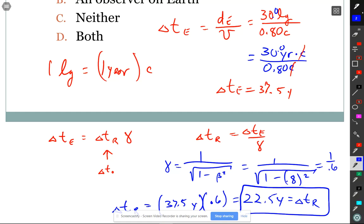Wait, 22 and a half years. But the actual time spent is still 30 years? A person on Earth is going to age 37 and a half years. A person in the spacecraft ages 22 and a half years. Don't worry. We're going to come around on this.